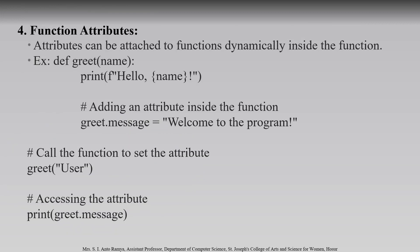Next is function attributes. We can add attributes to functions at runtime, but those attributes must be added inside the function itself. For example: 'def greet(name): print("Hello", name); greet.message = "Welcome to the program"'. Outside the function, calling 'greet("user")' will print 'Hello user'. Then 'print(greet.message)' will print 'Welcome to the program'.